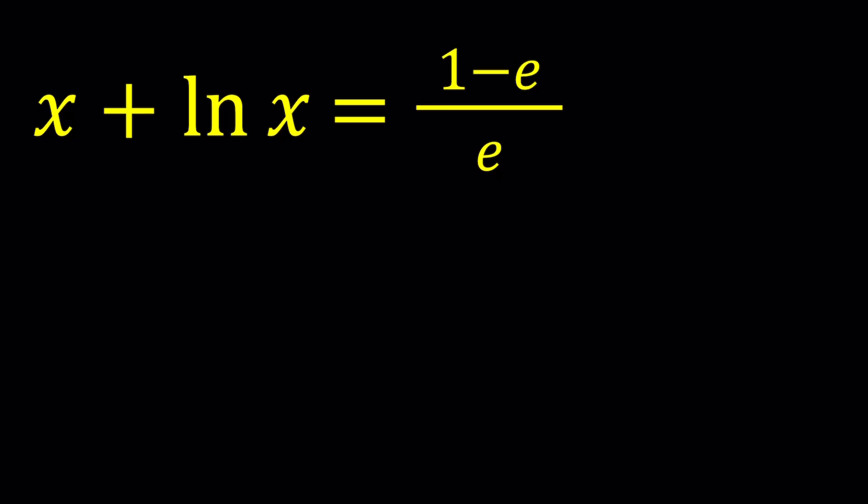So what do you do when you have x plus ln x? As a general principle, anytime you see x plus ln x equals a constant, always do e to the power of that thing. But first of all, I can go ahead and separate this into two fractions. Write it as 1 over e minus 1. So we're going to do the following. We're going to do e to the power of both sides.